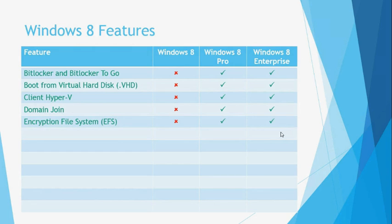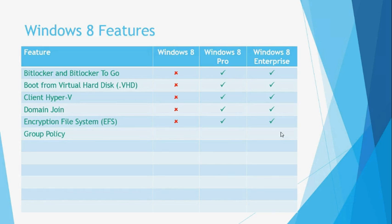The next feature is Group Policy, which allows you to customise the computers on your network. Group Policy is typically configured on a central server, and these configurations are then rolled out to computers on your network. Some common examples include using a corporate desktop background or screen saver, or forcing computers to lock themselves automatically after a period of idleness. Group Policy can be configured on Windows 8 Pro or Windows 8 Enterprise.